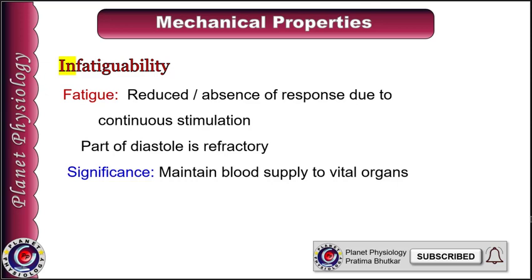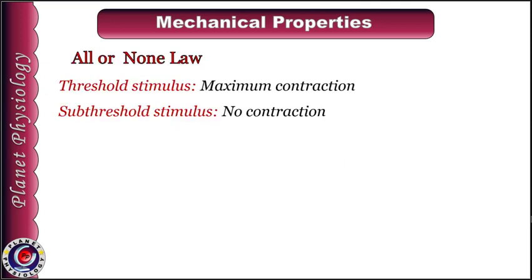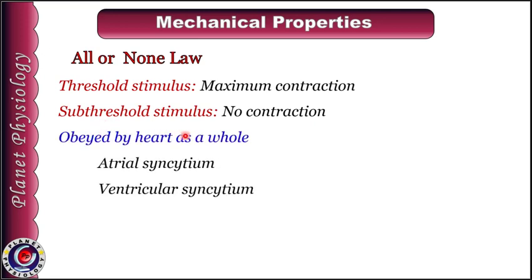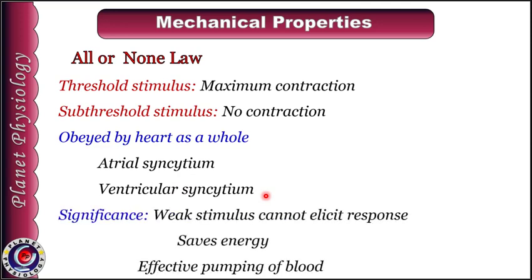This is also important for maintenance of blood supply to vital organs. The last mechanical property is all or none law. It states that if the stimulus is threshold or suprathreshold, the muscle will show maximum contraction, whereas if the stimulus is subthreshold, the muscle will not contract at all. In the case of the heart, this law is obeyed by the cardiac muscle as a whole — that is, the atrial syncytium as well as the ventricular syncytium will demonstrate this property. The importance is that weak stimuli cannot elicit contraction, thereby saving energy, whereas for threshold and suprathreshold stimuli the entire cardiac syncytium contracts together, which is essential for effective pumping of blood.